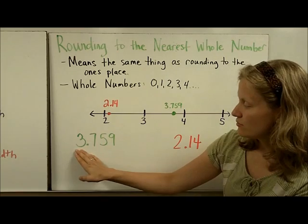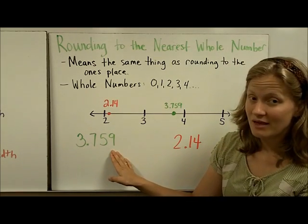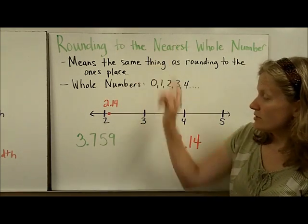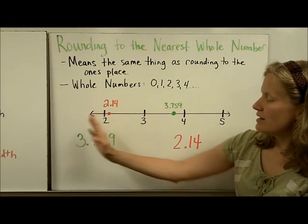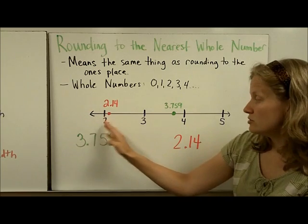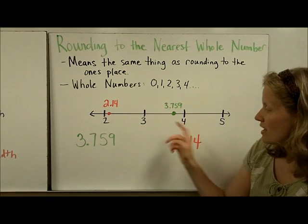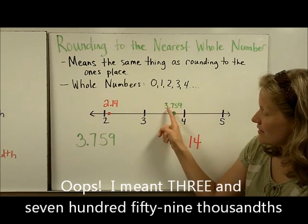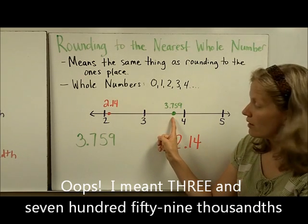So let's round 3.759 to the nearest whole number. If we look at it on a number line, here are a number line of counting numbers. Zero, one, two, three, four, five. And I've placed 3.759 on the number line about where it would go.